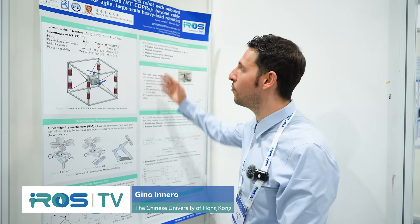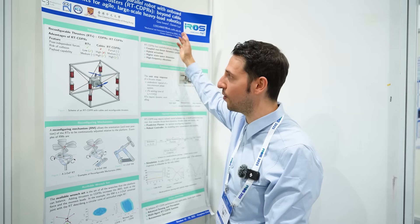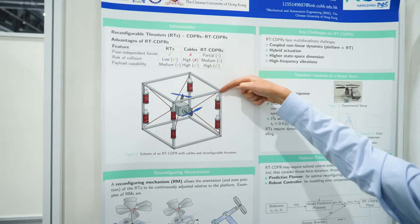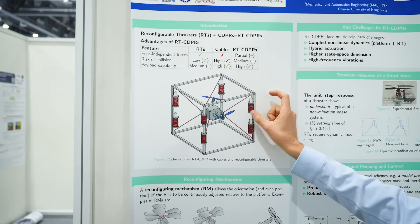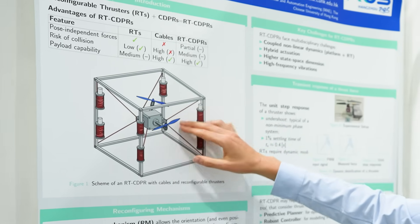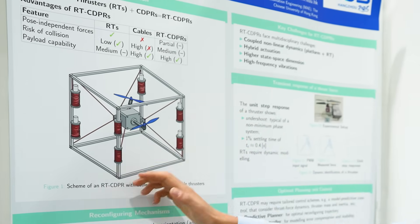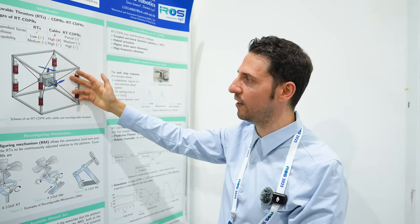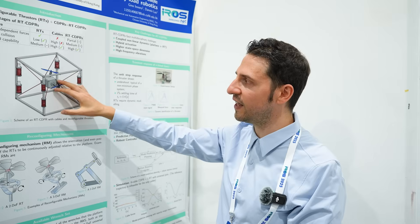My name is Jino Iner. I'm from the Chinese University of Hong Kong. I work on cable-driven parallel robots with reconfigurable thrusters. The idea is to have a cable-driven robot, but cable-driven robots have some problems. For example, cables can just pull, they can't push. And because of this, we usually need a lot of cables to effectively control the platform.